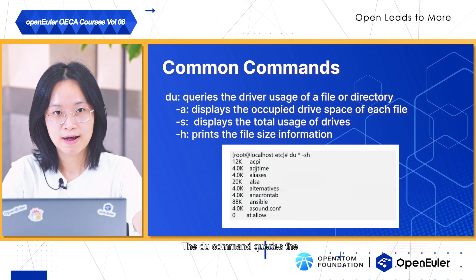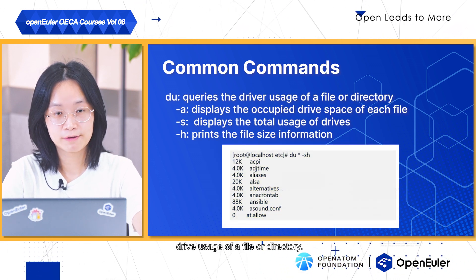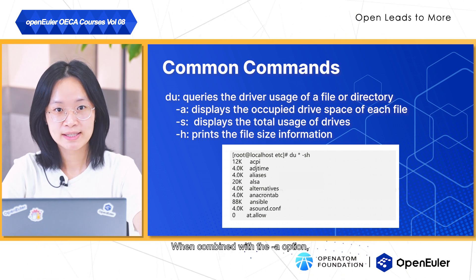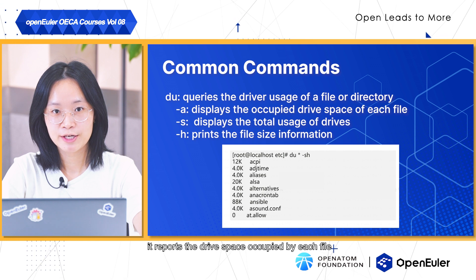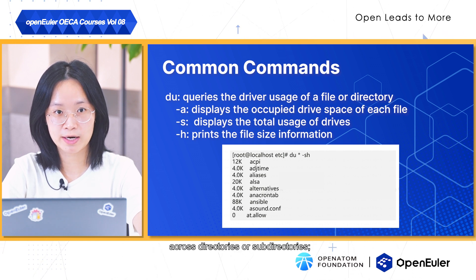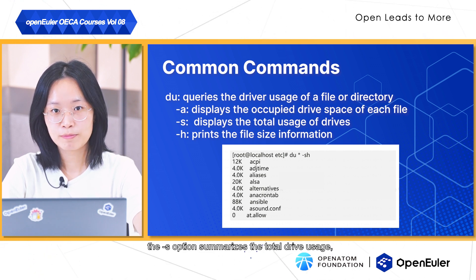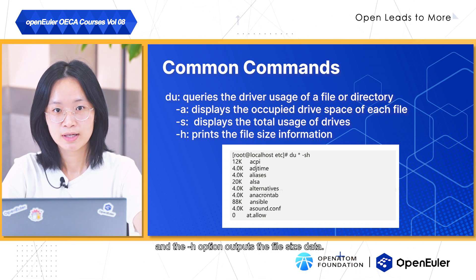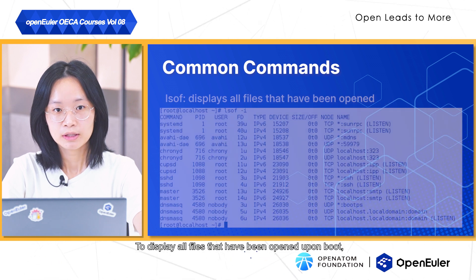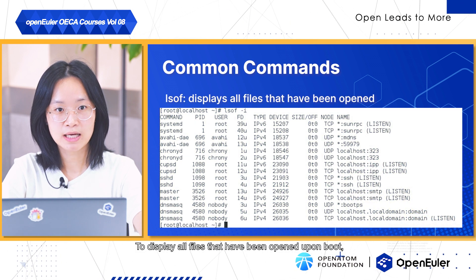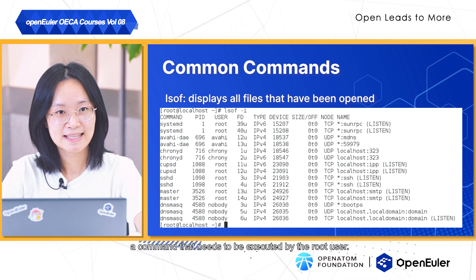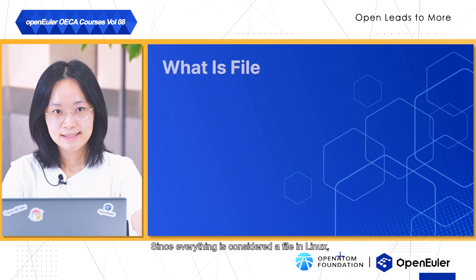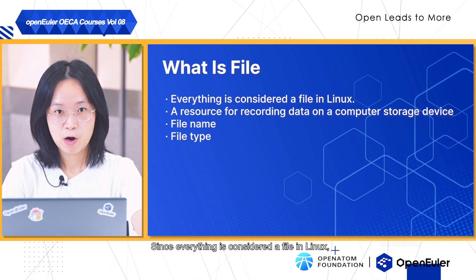The du command queries the disk usage of a file or directory. When combined with the -a option, it reports the disk space occupied by each file across directories or sub-directories. The -s option summarizes the total disk usage, and the -h option outputs the file size data in a human-readable format. To display all files that have been opened upon boot, we can use the lsof command, which needs to be executed by the root user.